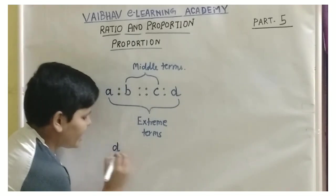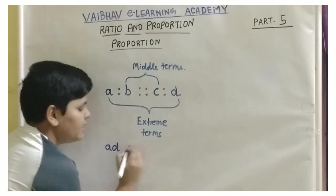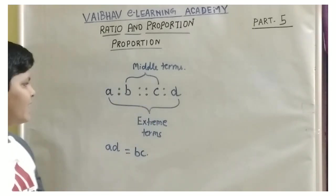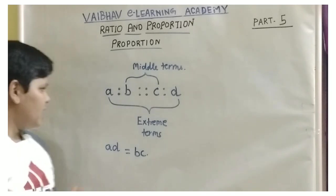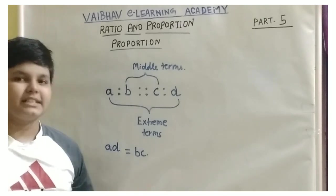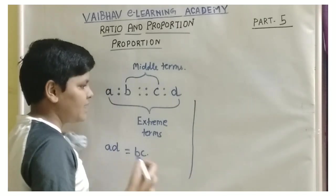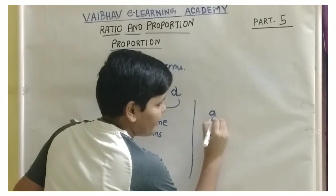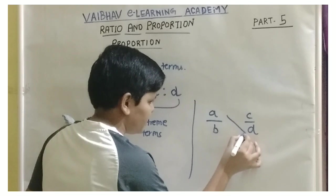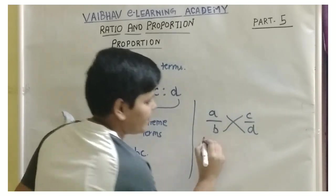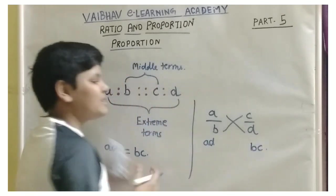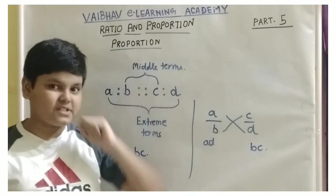Here, if the product of the extreme terms a and d is equal to the product of the middle terms b and c, then we can say that it is proportional. There is also another way: if a by b and c by d are two ratios, the cross multiplication gives a times d and b times c. This was the rule discussed in our first video about ratio — one of the points to remember.